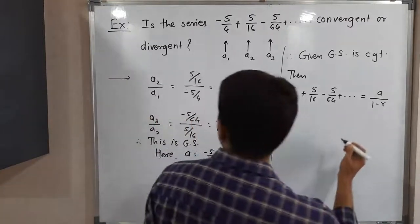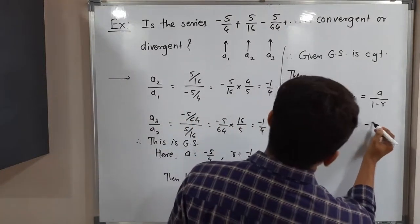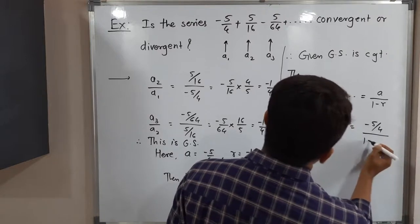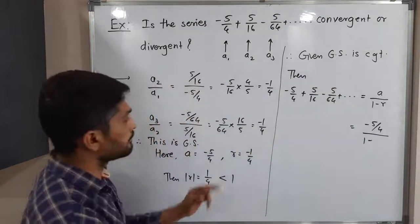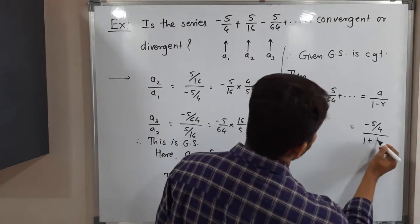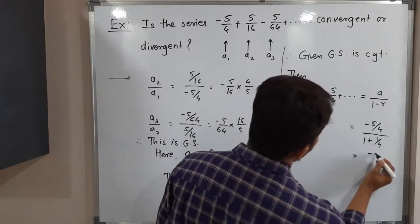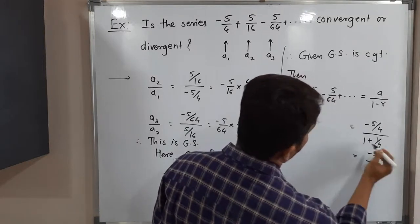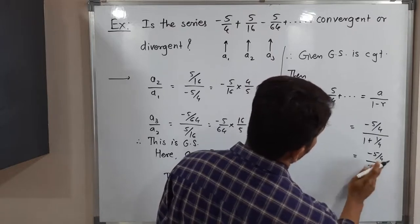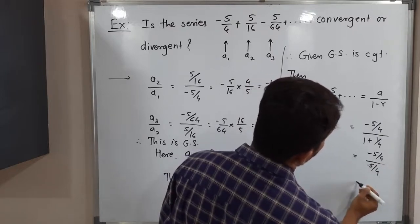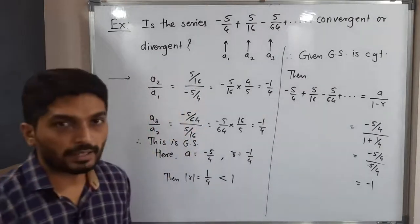Let us put the values. What is our A? First term minus 5 by 4. What is our R? Our R is minus 1 by 4, minus minus plus 1 by 4. So minus 5 by 4. You can add. So what will you have? Sorry, if you add, you will have 5 by 4.